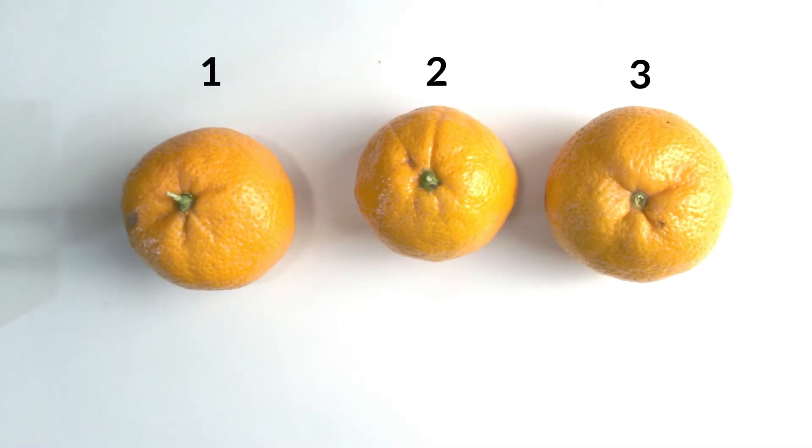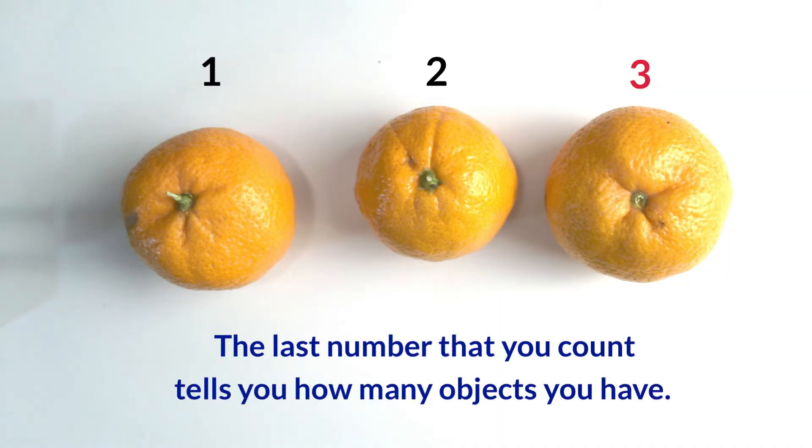So what I notice is that the last number you counted was three, and that's how you know how many mandarins there are. Is that right? Yep. Okay. So the last number that you count tells you how many objects you have. All right.